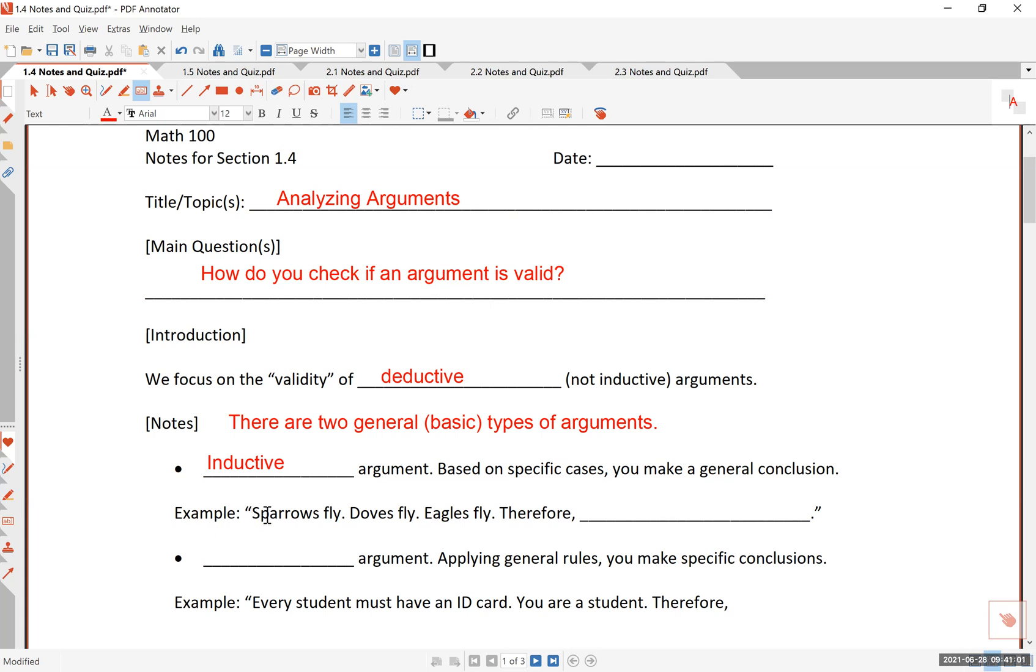Here's an example. Sparrows fly. Doves fly. Eagles fly. And you can add a few more. Condors fly, many other birds fly. And therefore, what's the conclusion? What is the conclusion you can make? Maybe you can say all birds fly. You notice here, I have given you three specific examples: Sparrows, doves, and eagles, and maybe a few others. And then based on these specific cases, I am making a general conclusion that all birds fly.